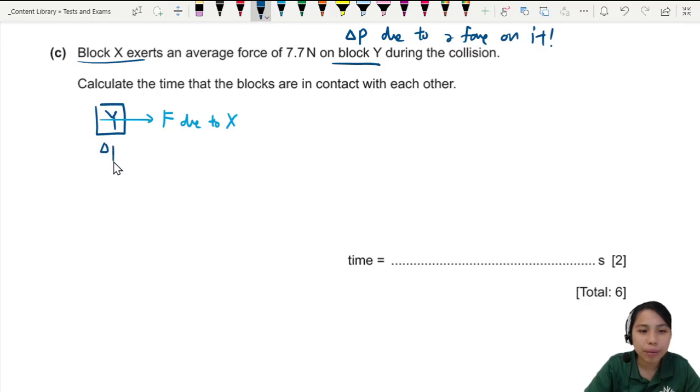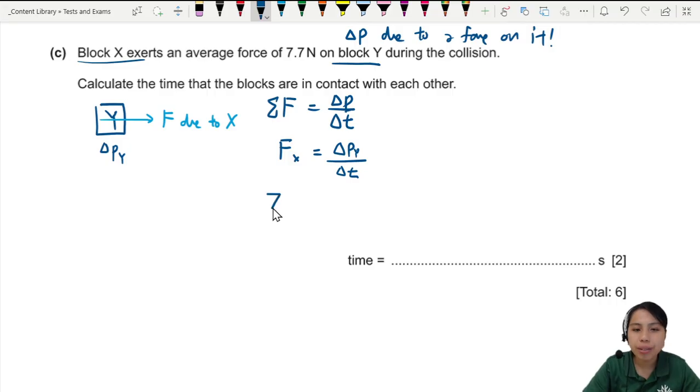And this one will have a change in momentum of Y. So you use: the force is related to the change in momentum. This is Newton's second law, by the way. Who's the force? Force due to X. And the change in momentum of Y. Okay, let's write out our values. So 7.7 Newtons.